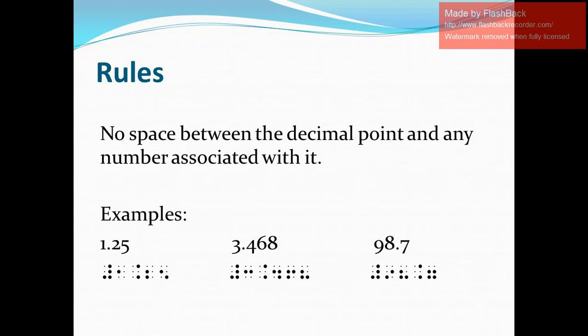And our last example for Rule 1: 98.7. In Nemeth, we write the numeric indicator, the digits 9 and 8, the decimal point, and then the digit 7.